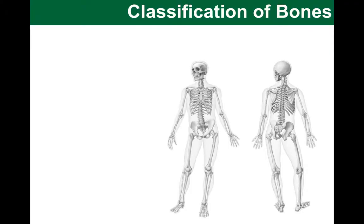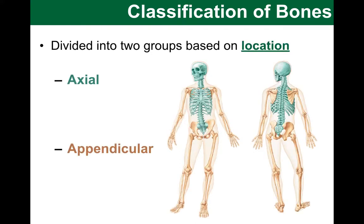What we have here is two very nice diagrams of a human skeleton. It is not quite in a perfect anatomical position in the anterior one, but don't let that confuse you. The first way to divide our skeleton into two groups is based on the location of the bones. What we see here in bluish or turquoise color is the axial skeleton. It contains the skull, vertebral column and ribcage — that really is the trunk of the body: the head, neck and the trunk.